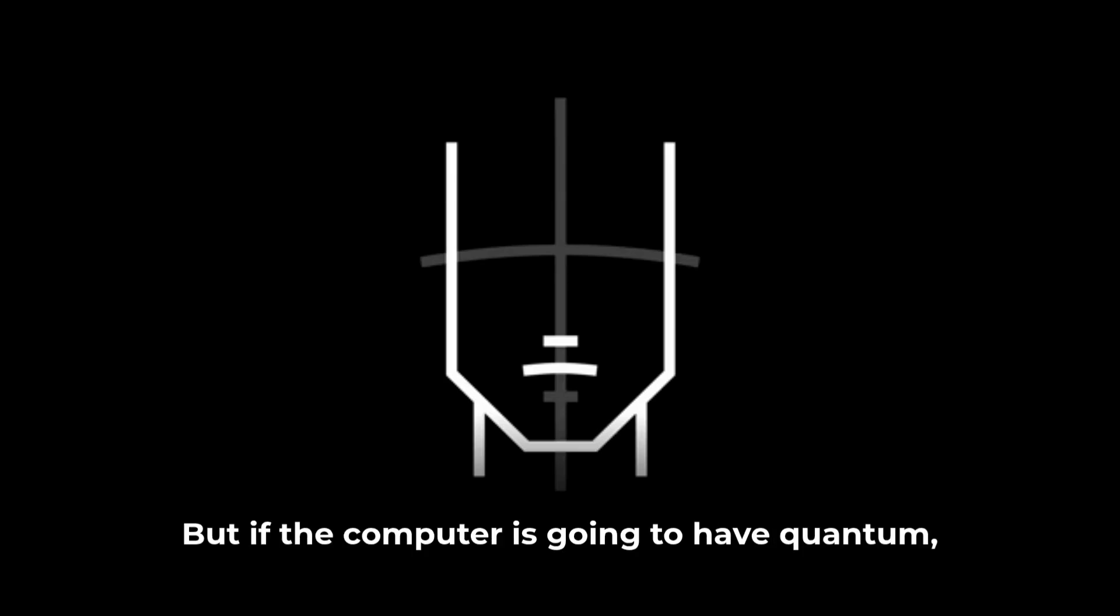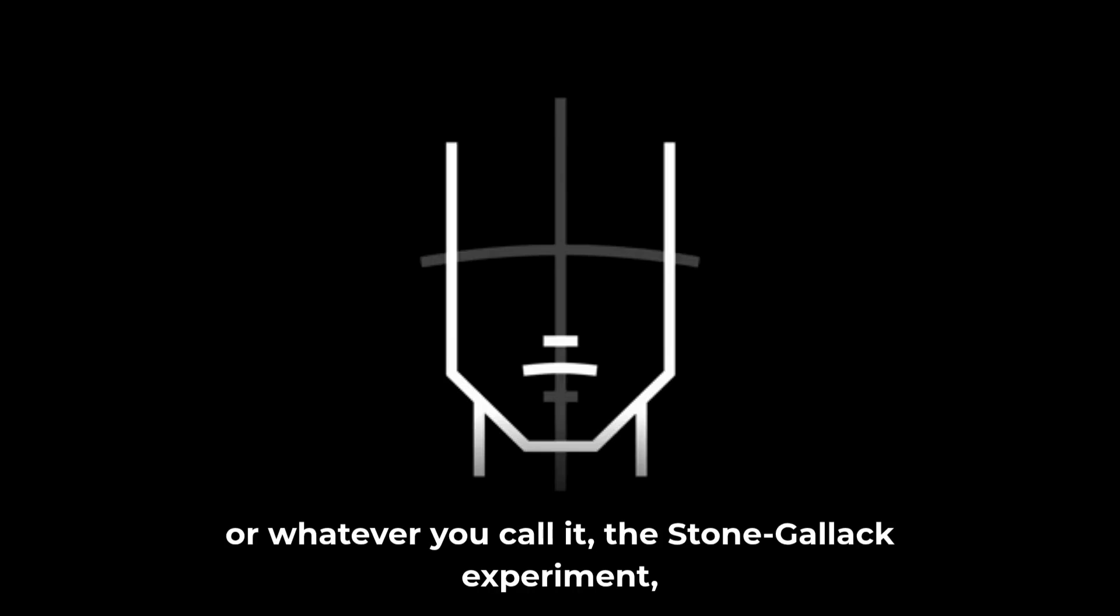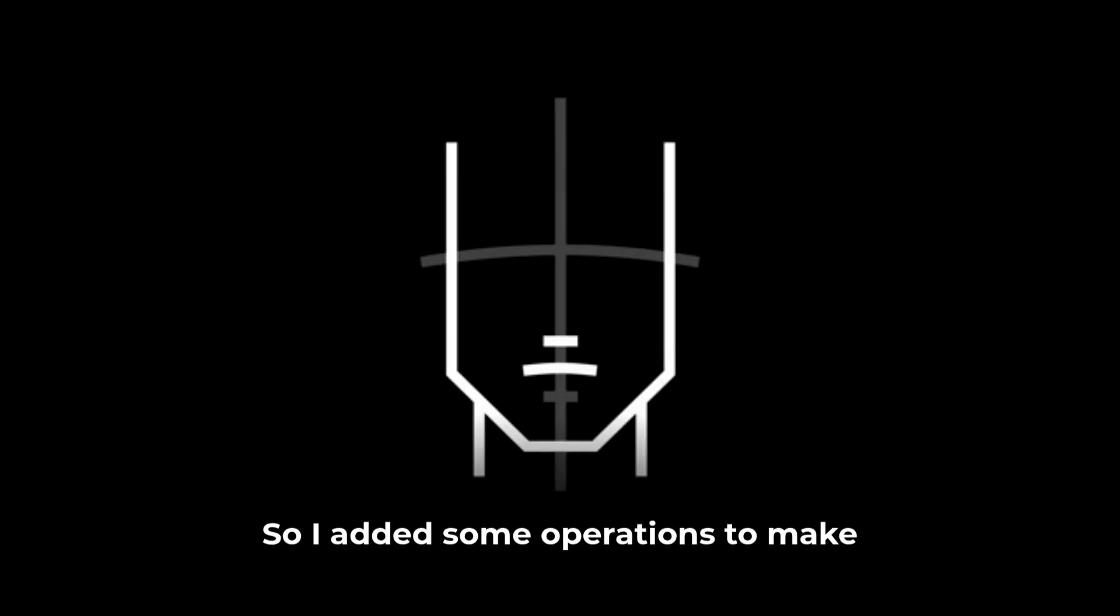So there's this computer that, but if the computer is going to have the two-slit experiment or whatever you call it, the Stern-Gerlach experiment or whatever, they're all equivalent, really. If it's going to have that in it, then the computer can't be decoherent. So it can't be a classical computer. So it must be augmented with these quantum operations. I added some operations to make a coherent classical computer with these extra operations. And that's what it was in my mind. It was just an object.